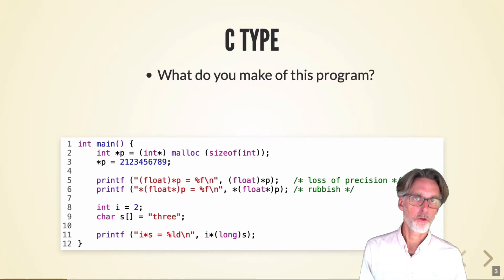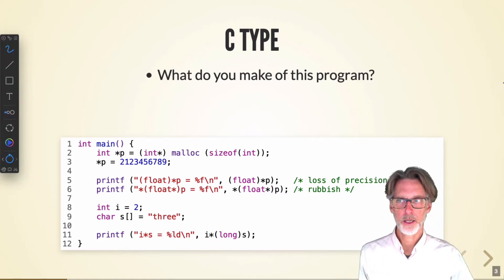Here's a C program. On line two, we allocate an integer on the heap. That's then held by a pointer, P, and we then initialize that pointer.